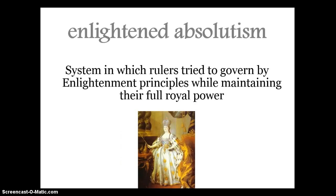Enlightened absolutism: the system in which rulers tried to govern by Enlightenment principles while maintaining their full royal power. Most royalty did not want to give up their power or rights, so they decided to adapt their power to these new Enlightenment ideas — partly because the Enlightenment was an absolutely popular idea and they did not want to lose their power by having the peasants revolt against them. They wanted to show the people that they could change and adapt to the times.